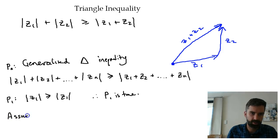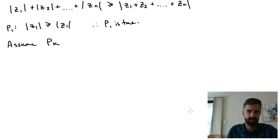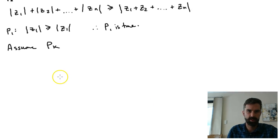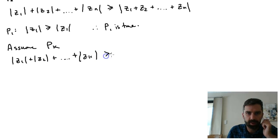Now what we're going to do is assume P(k). So P(k) says that |z1| + |z2| + ... + |z_k| is going to be greater than or equal to the modulus of all of them added together.